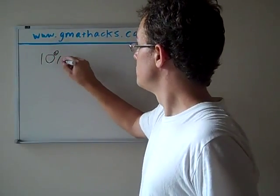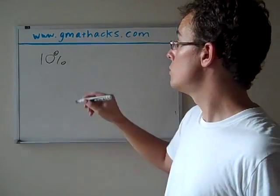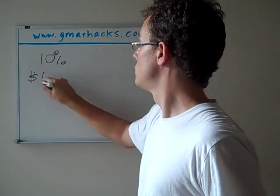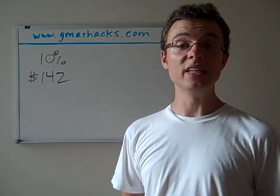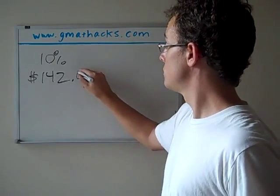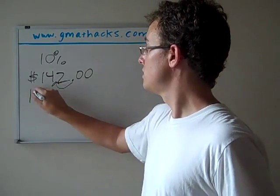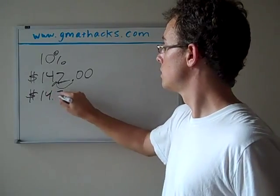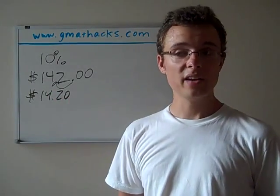First of all, let's start with an easy one. 10% doesn't get much easier than that. Let's say we want to find 10% of $142. You probably don't need me to tell you that you just take the decimal point, $142, move it over one. 10% of $142 is $14.20. Like I say, it doesn't get any easier than that.